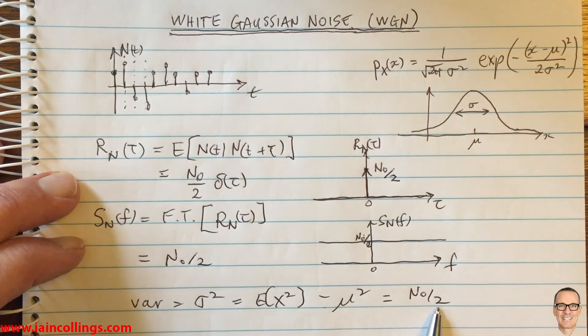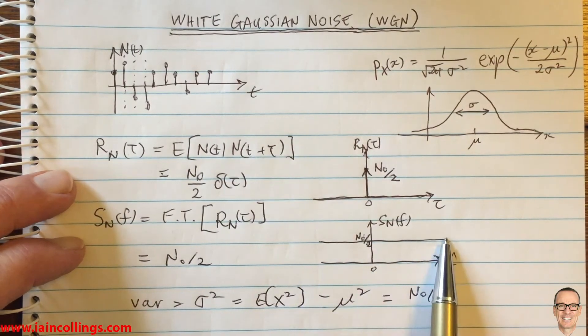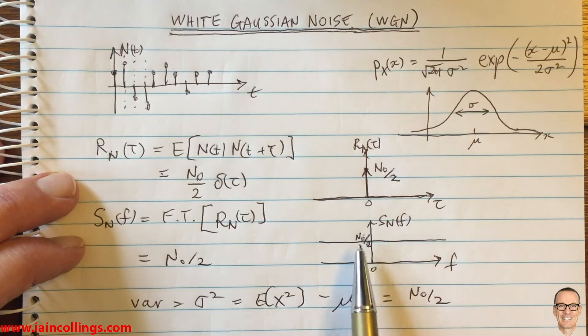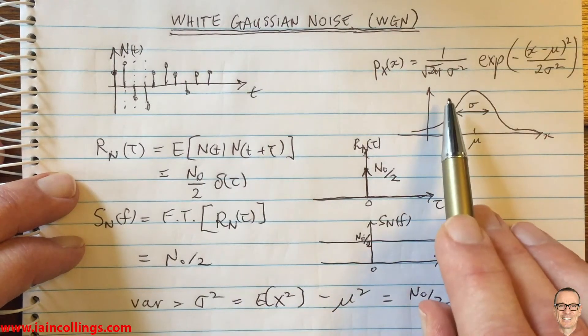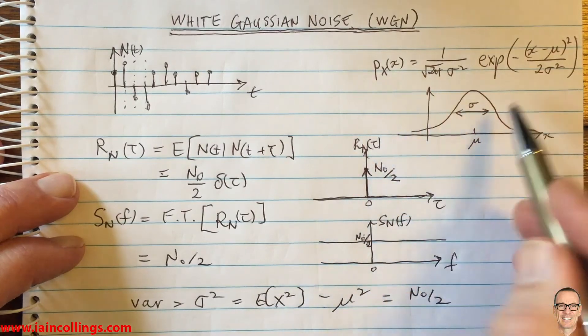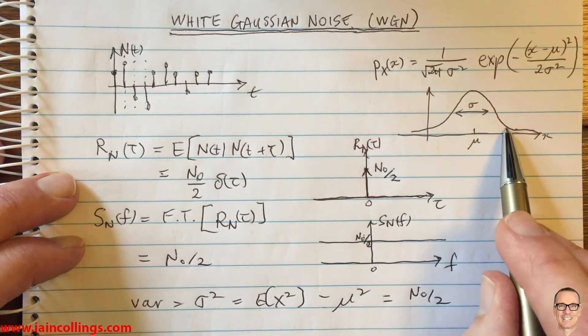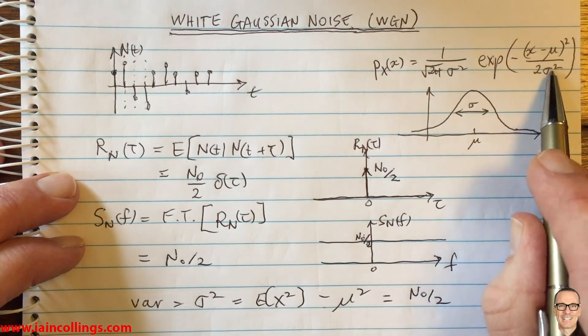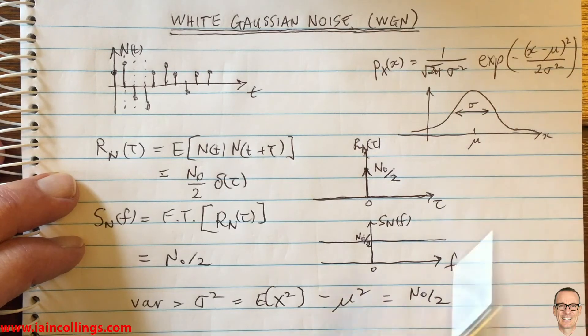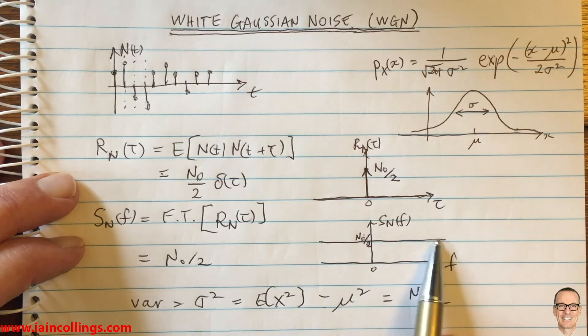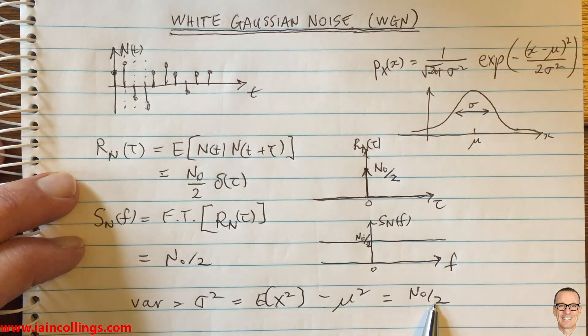So the N naught over two, which we see in the spectral density and the autocorrelation function, that value equals the sigma squared. So when you're doing Gaussian noise calculations, if you're using this shape and looking for bit error rates, you're often integrating under the tail of Gaussian, so you're dealing with the sigma or sigma squared. It relates to the power spectral density and N naught by being equal to N naught divided by two.